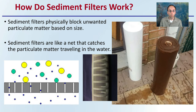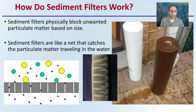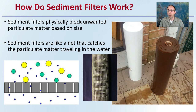How do sediment filters work? Sediment filters physically block unwanted particulate matter based on its size. They're like a net that catches particulate matter traveling in the water. We have larger particles caught and smaller particles able to pass through. Sediment filters take out those larger clay and sand particles, in comparison to something very fine like ions. It can end up looking like the filter is encased in soil.